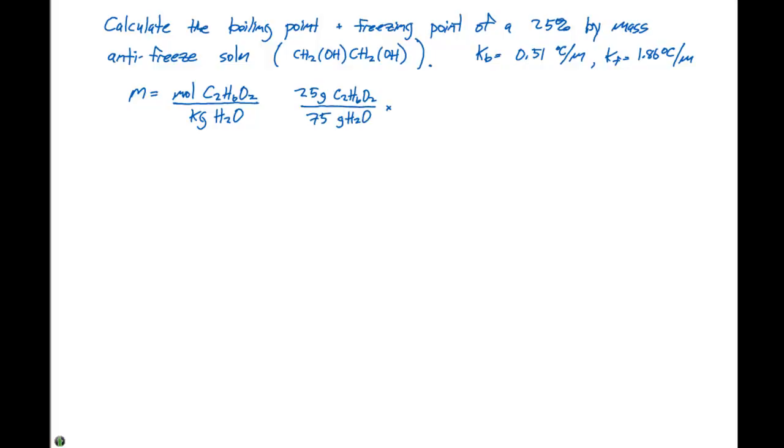We can do a conversion then. We know that one mole of C2H6O2 is going to be 62.1 grams. And then we also know that 1000 grams of water is going to be 1 kilogram.